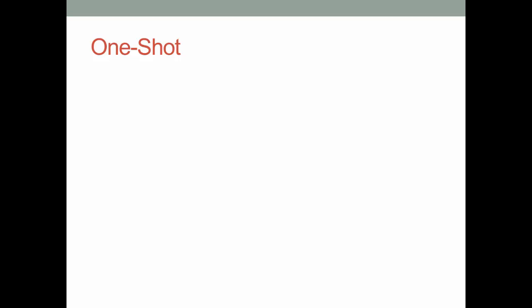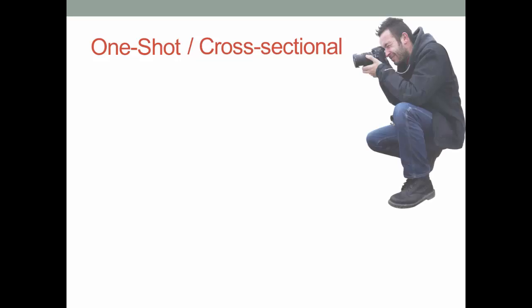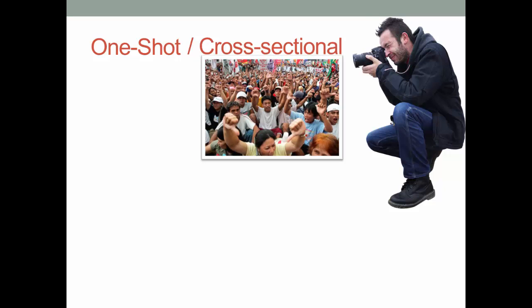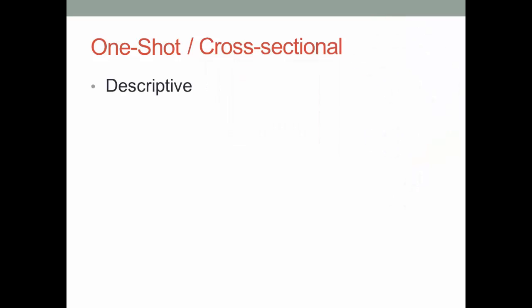The first type of research study is the most common, called the one-shot or cross-sectional study. This study is conducted once, meaning you have one shot at getting the data. Think of a camera. You have one chance, one shot, at getting the right picture. It is descriptive in nature because you are describing the population on the basis of one study.